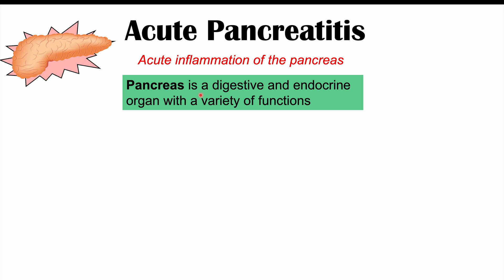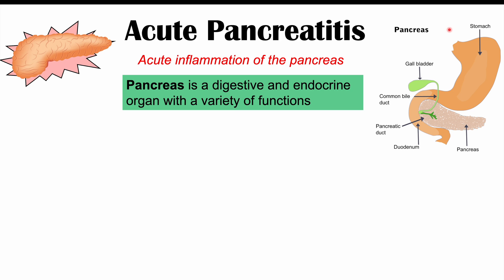The pancreas is a digestive and endocrine organ. Looking at this image, here's the stomach, which leads into the small intestine. The duodenum is the first part of the small intestine, and tucked in with the duodenum is the pancreas. The pancreas is involved in producing insulin as well as digestive enzymes. For more information, please check out the full lesson on acute pancreatitis.